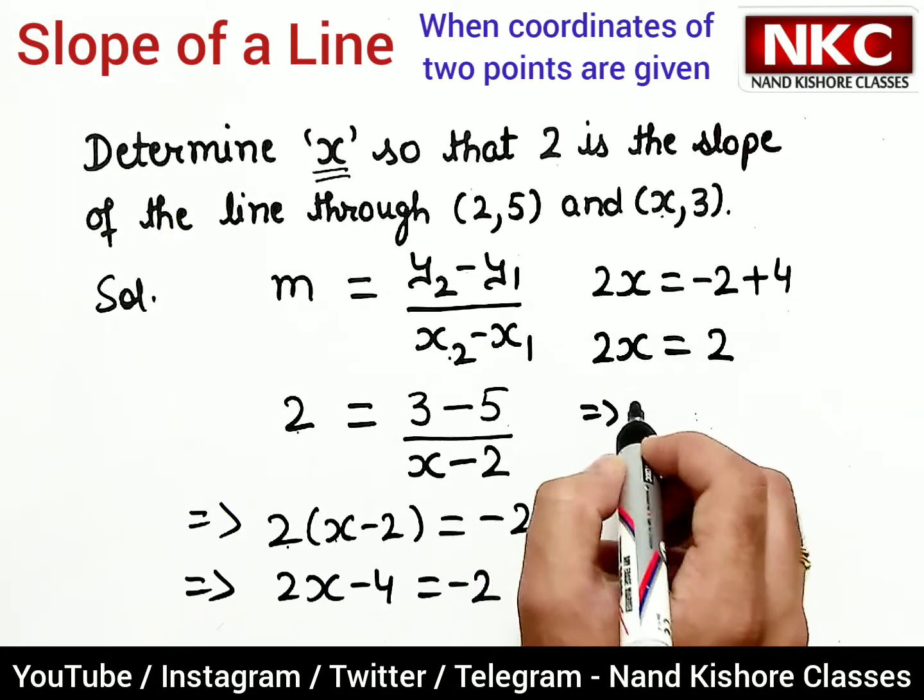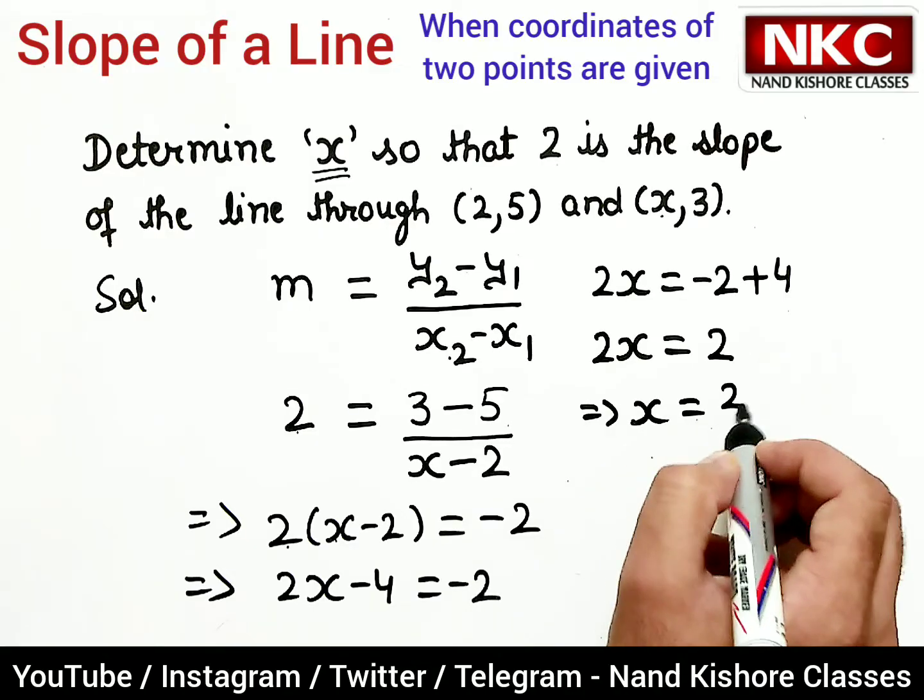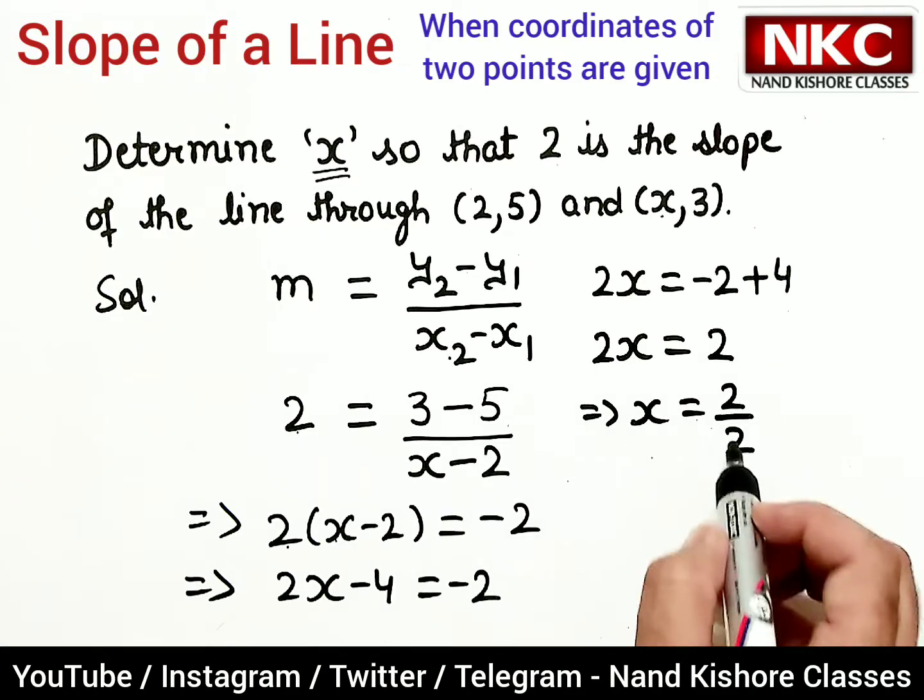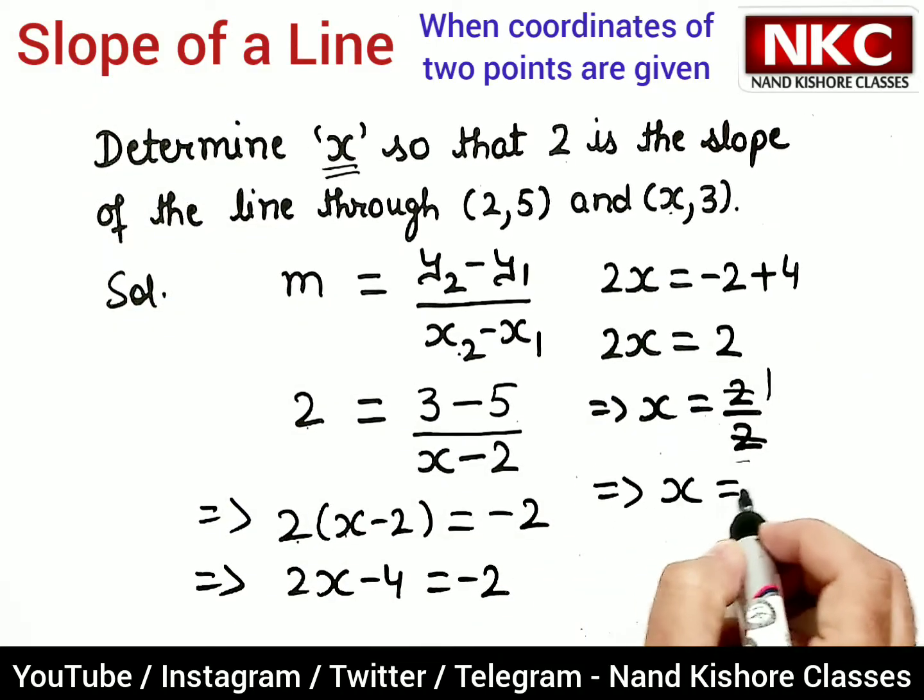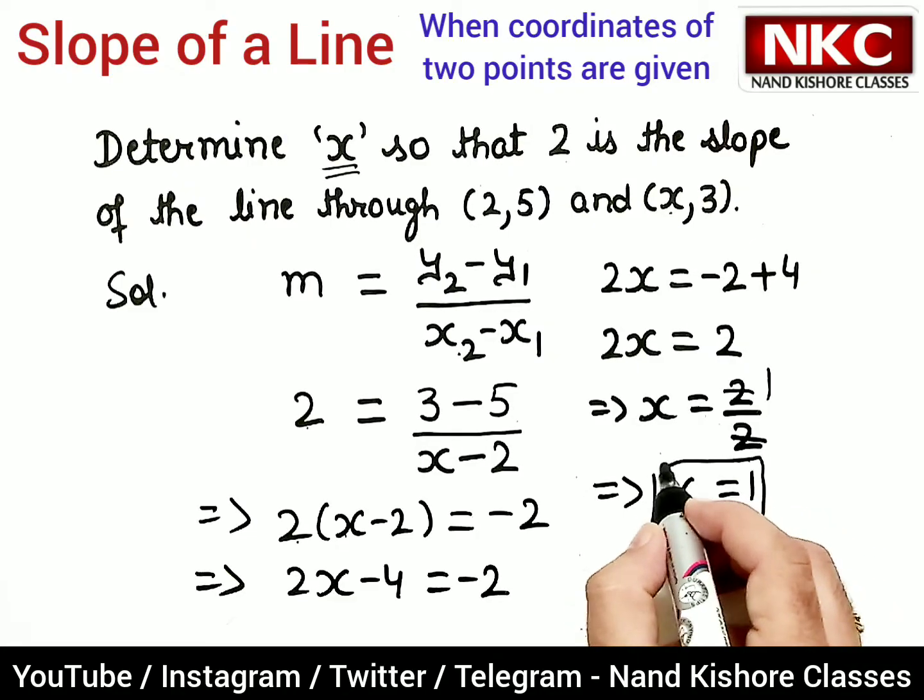And finally, x is given by 2 by 2—it is cancelled—so we get x is equal to 1.